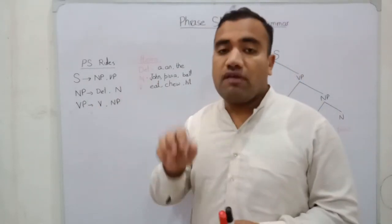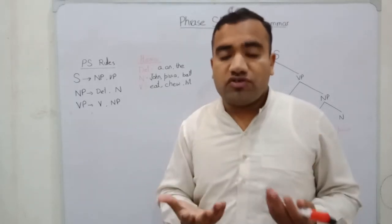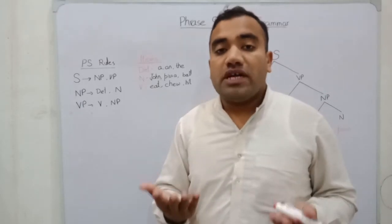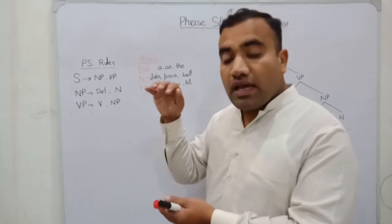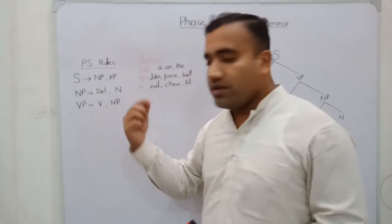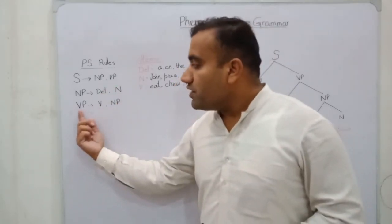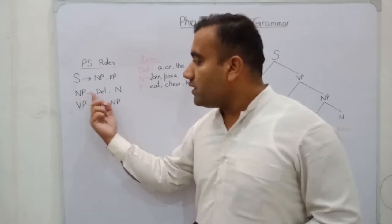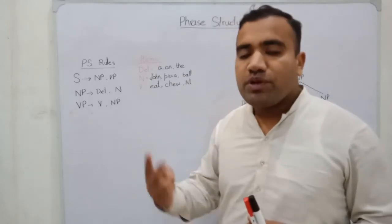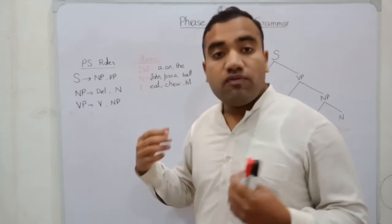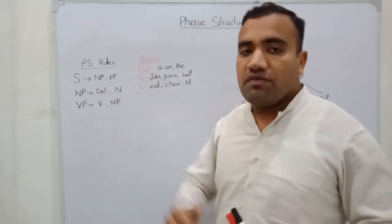We then come down to the very lowest level — the lexical items. Items are basically the words of that particular language. At this terminal level, V means verb, N means noun, and Det means determiner. To generate a VP we need two items: V and NP. To generate an NP we need a determiner and a noun.